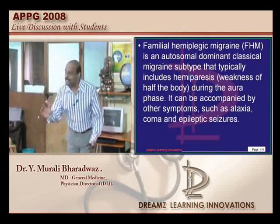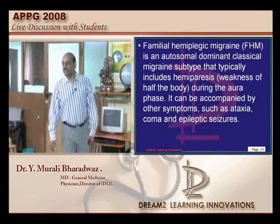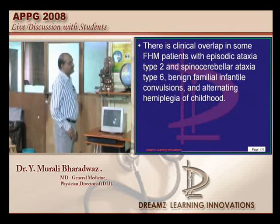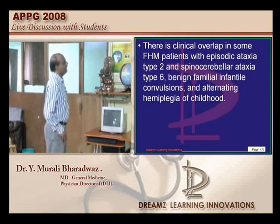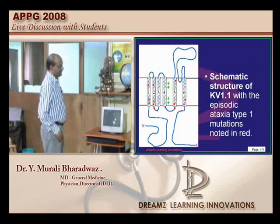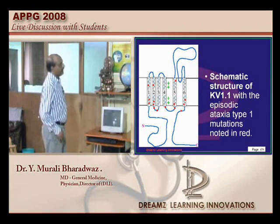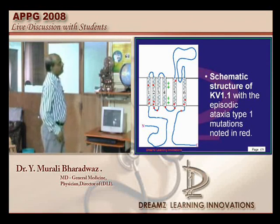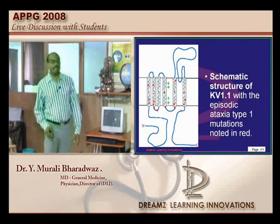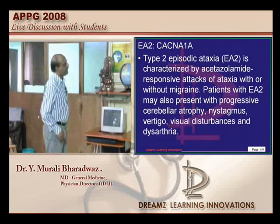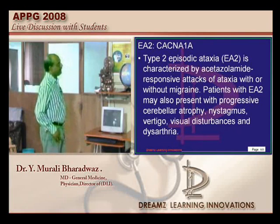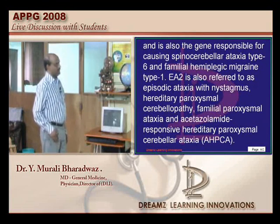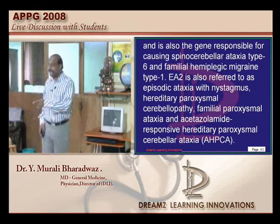Familial hemiplegic migraine is the second important channelopathy entity. It presents with hemiparesis, ataxia, coma, and epileptic seizures associated with the migraine type. Both the sodium channel and calcium channel are abnormal here. The third entity is episodic ataxia — autosomal dominant, with ataxia and myokymia — and it is the classic example of a potassium channelopathy. So A becomes the answer.